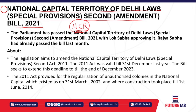The second topic is the National Capital Territory of Delhi Special Provisions Second Amendment Bill 2021. Parliament has passed this bill — both Lok Sabha and Rajya Sabha have given their nod. Rajya Sabha recently passed it after Lok Sabha had already done so.